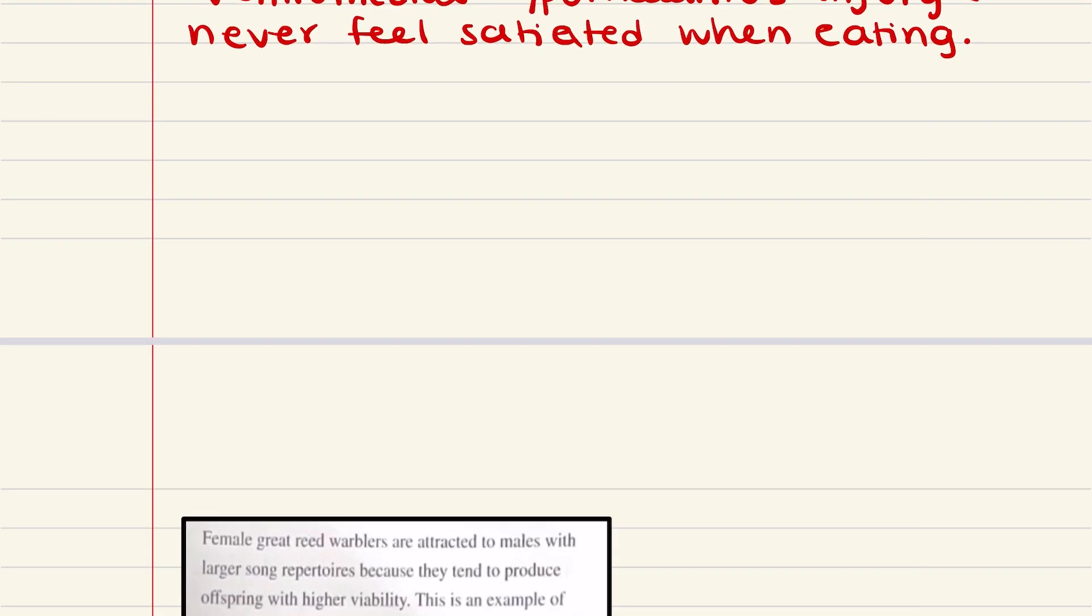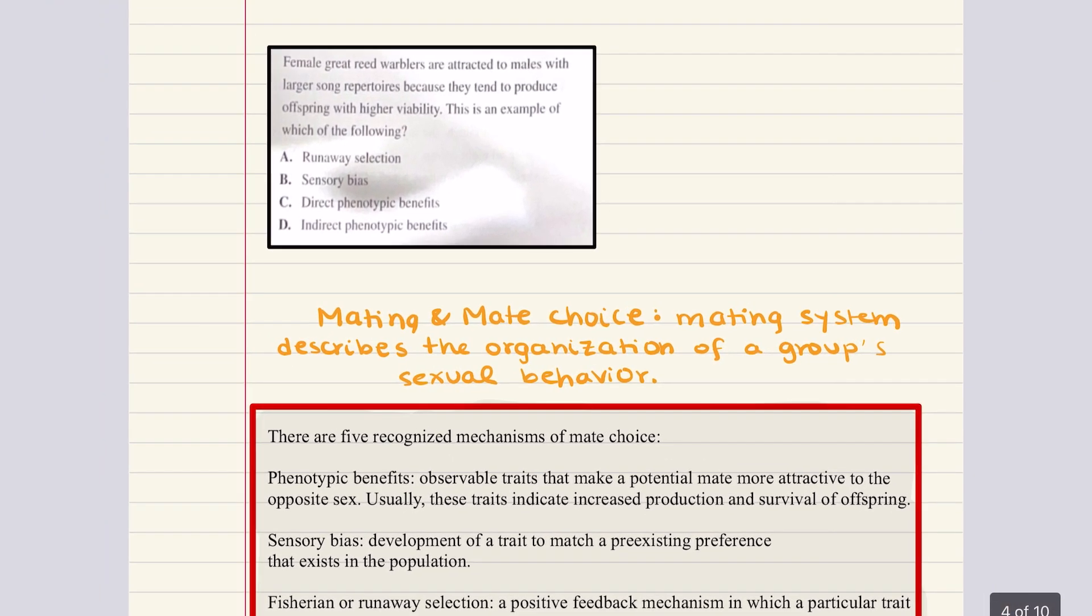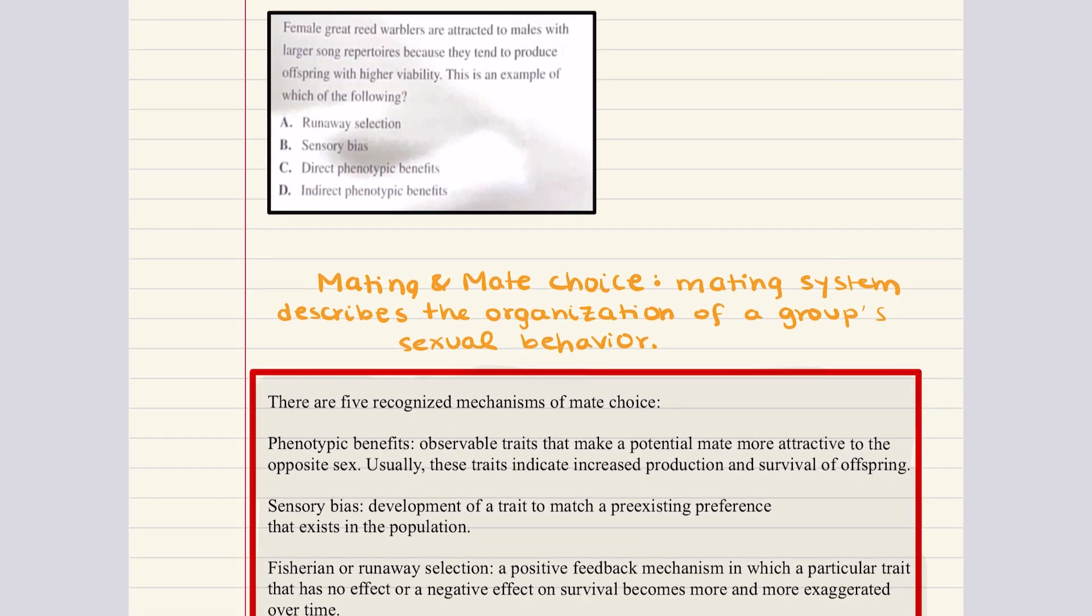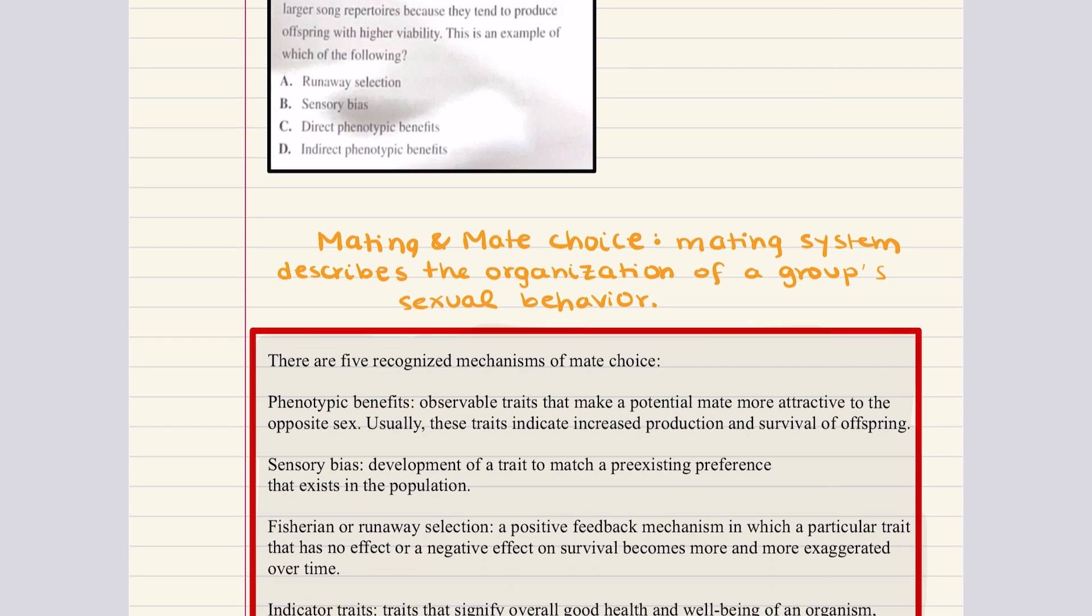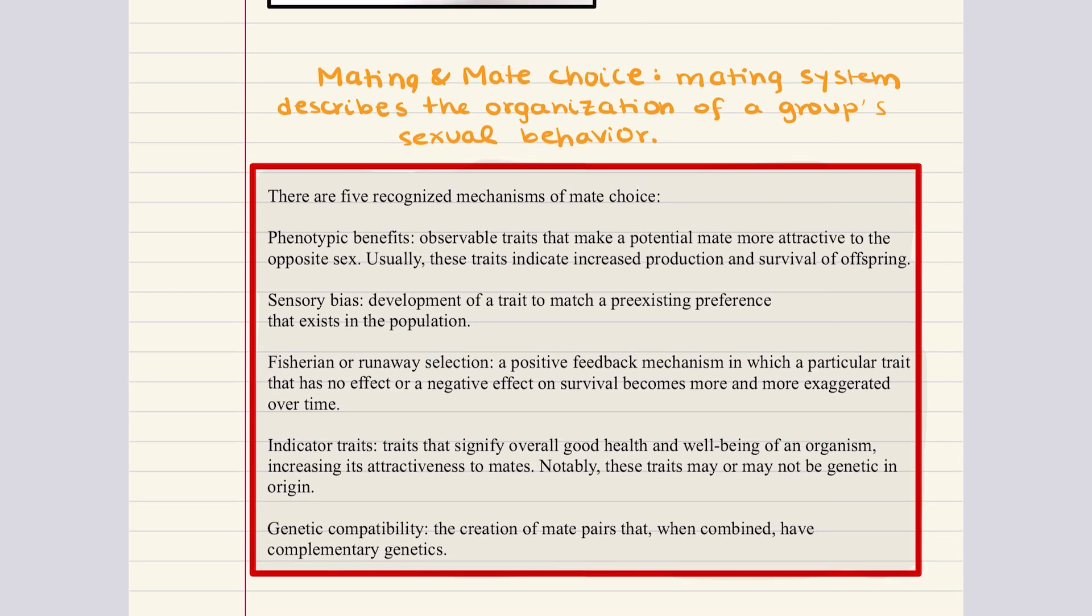Let's go ahead and move into problem number six. Problem six says female great reed warblers are attracted to males with larger song repertoires because they tend to produce offspring with higher viability. This is an example of which of the following? Runaway selection, sensory bias, direct phenotypic benefit, or indirect phenotypic benefits. All right, so when we talked about mating and mate choice, we talked about different mechanisms of mate choice. Let's go over them.